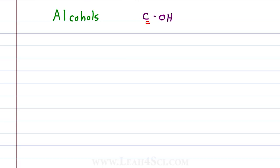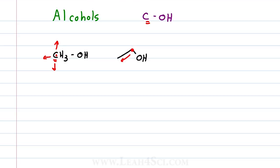The same thing works for alcohols — we're looking at the degree of substitution of the carbon atom specifically holding the alcohol. For example, methanol would not be considered a substituted alcohol because the carbon holding the oxygen is not bound to any other carbon atoms. If I put my pencil down, I have no lines to carbon, meaning it's not substituted at all. If we look at ethanol, the alcohol is attached to a carbon that has one line to another carbon — we do not count the line to oxygen because we're looking specifically at the carbon holding the oxygen. So ethanol would be a primary alcohol.